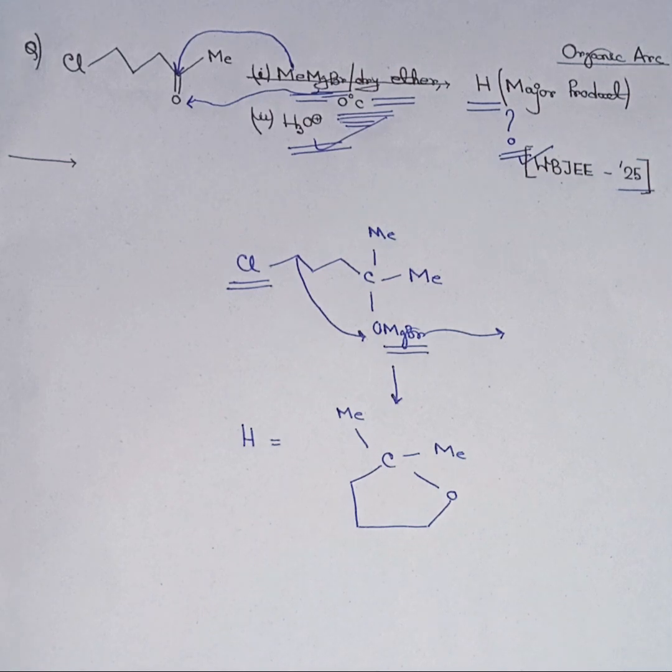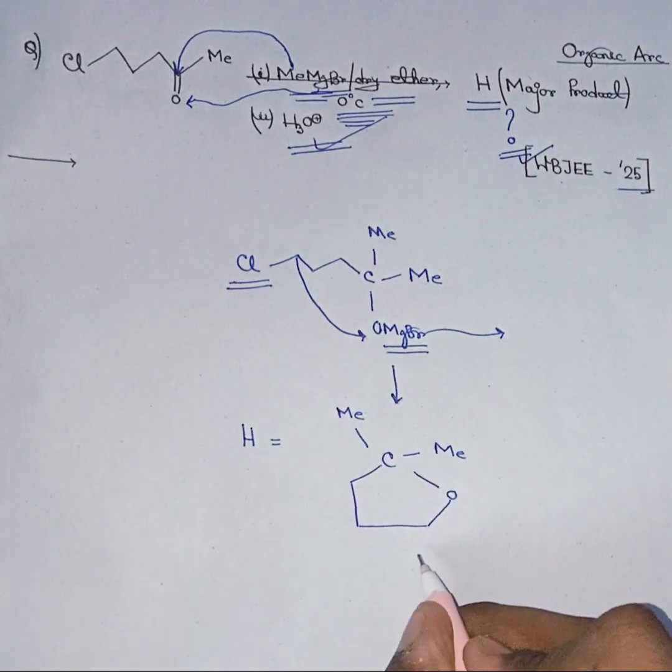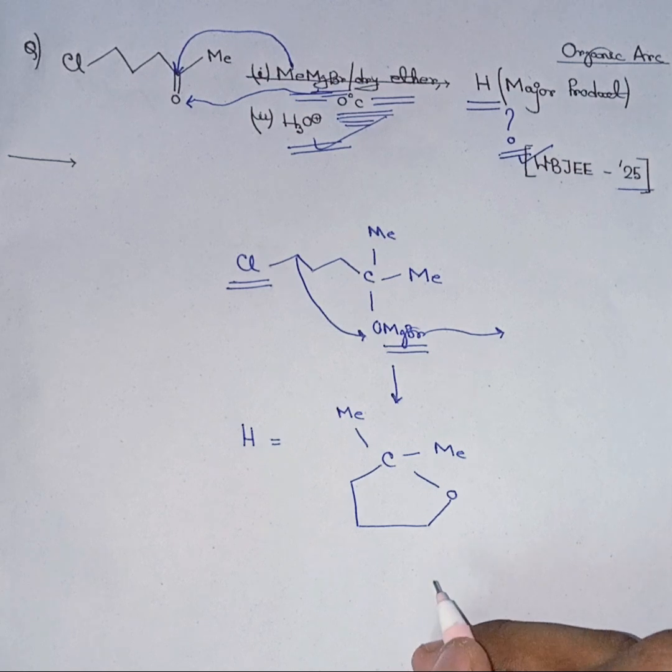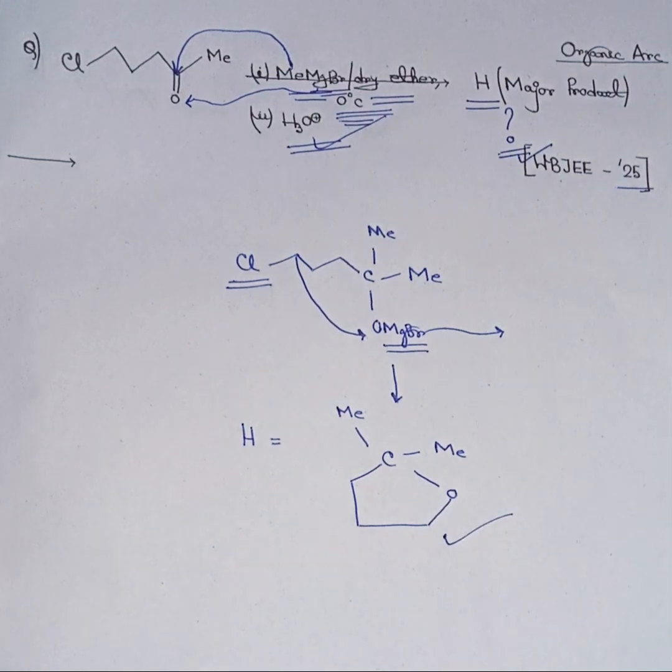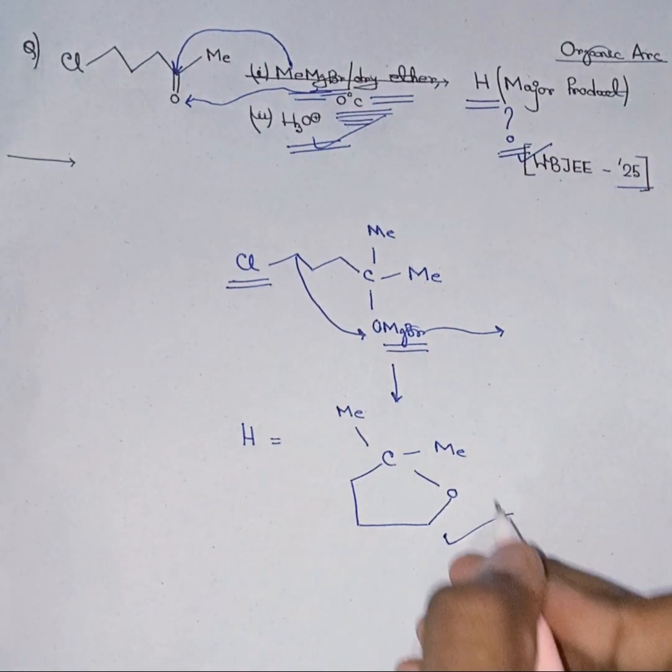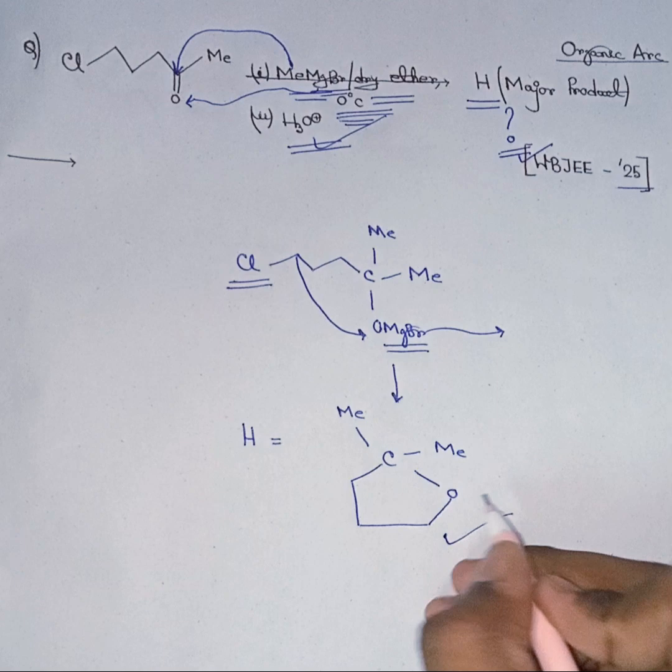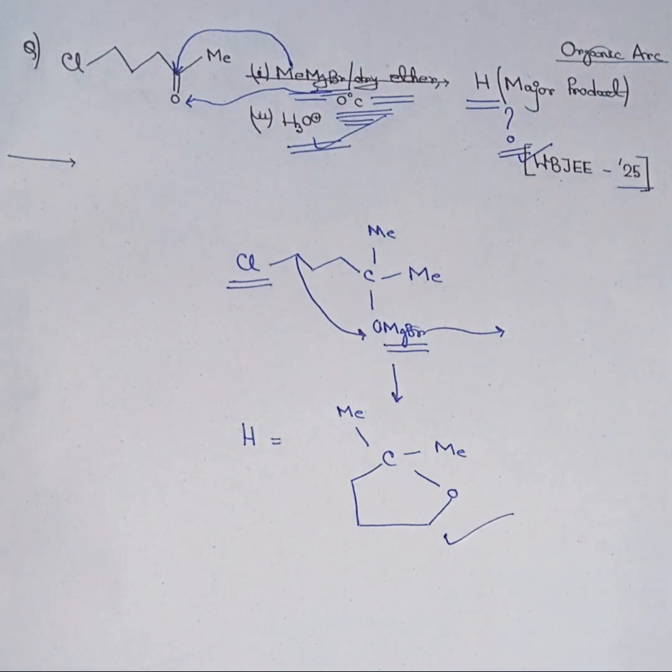This is how this question is solved. This is the compound H, the major product of this organic reaction. If you look closely, because of this ring structure, this compound is much more stable, and that's why this is the major product. This is a very important question from the haloalkanes and haloarins chapter. This concept of ring contraction or ring formation is very important for competitive exams.